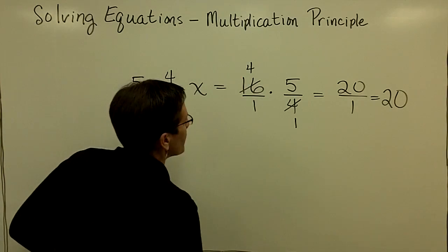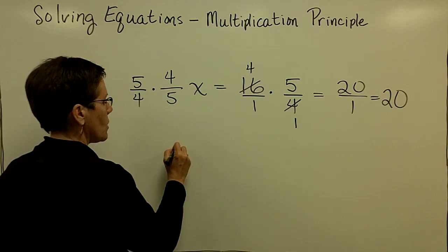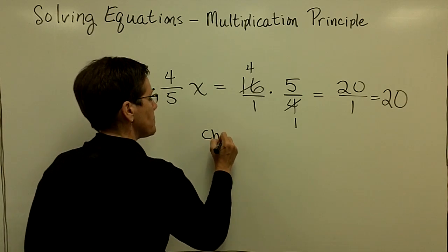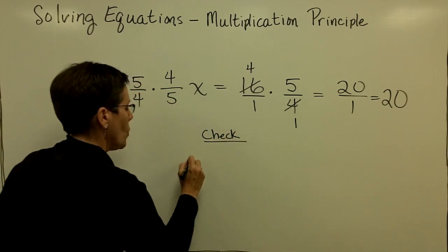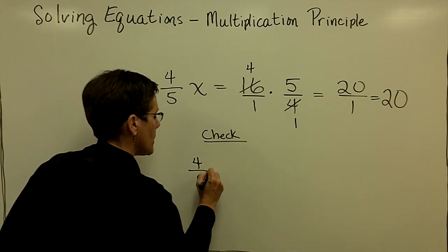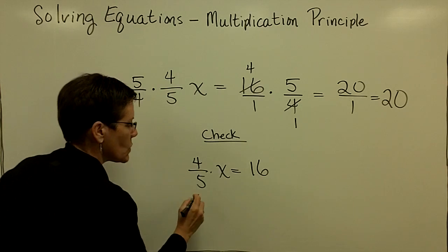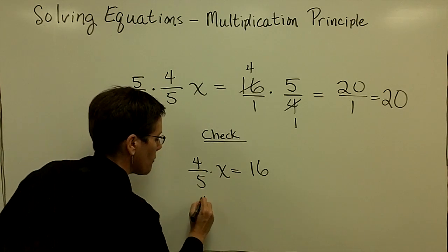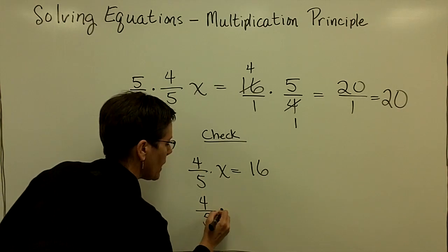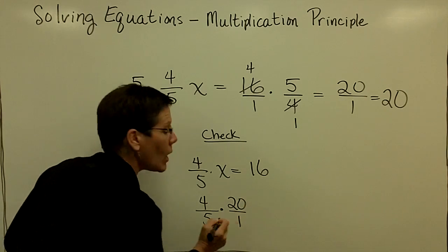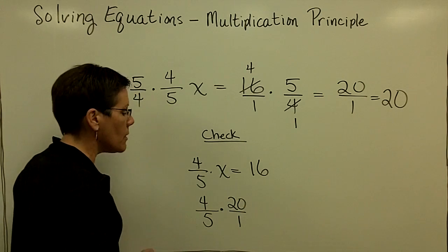Let's check this one. I want you to see, and I guess I'll do it right here. So here's my check. The original problem was 4 fifths times x equals 16. And I'm going to put in the 20 right here for x. So I have 4 fifths times 20 over 1. To keep that 20 upstairs is all.